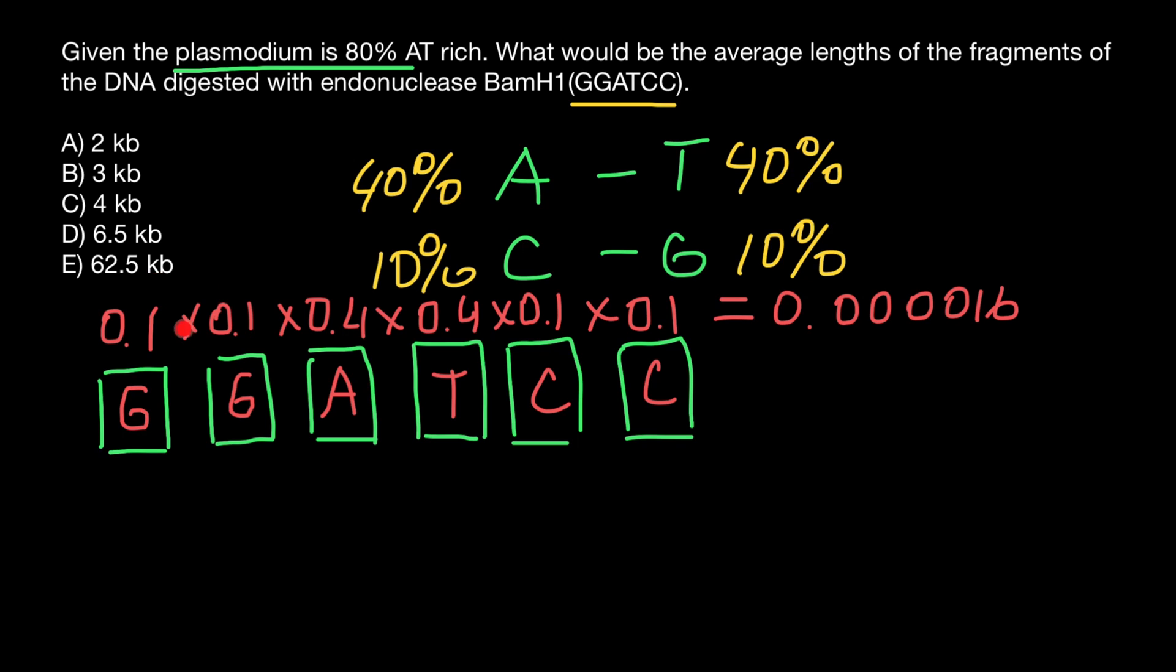I'm using the product rule here because we can ask what is the probability that in the first position we're going to find guanine, and in the second position again guanine. When we connect two probabilities with the word 'and', that means we have to use the product rule.